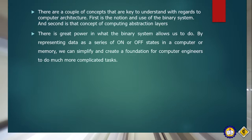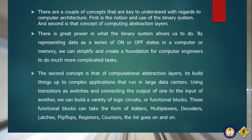There is great power in what the binary system allows us to do. By representing data as a series of on and off states in the computer or memory, we can simplify and create a foundation for computer engineers to do much more complicated tasks. Binary numbers are represented by 1 and 0. The second concept is that of computation abstraction layers — building things up to complex integrations that run in large data centers. Using transistors as switches and connecting the outputs of one to the input of another, we can build a variety of logic circuits or functional blocks. These functional blocks can take the form of adders, multiplexers, decoders, latches, flip-flop registers, counters, etc.